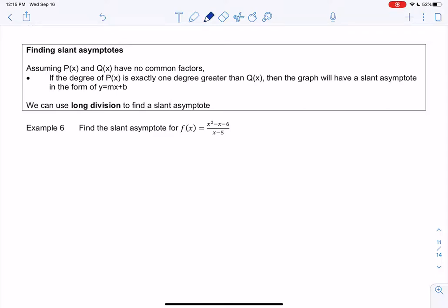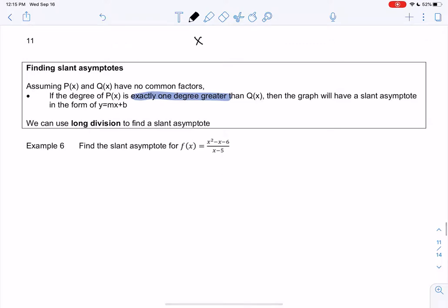This will happen when P(x) is exactly one degree greater. This could be like x cubed plus x over x squared plus 5x plus 6, or x to the fifth plus 5x plus 1 over x to the fourth plus 2x. If it's more than one degree, we don't get a slant asymptote.